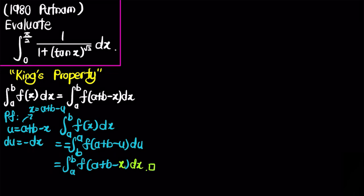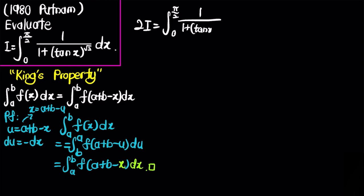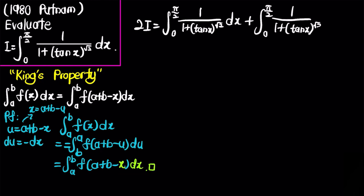To use this property, let this integral equal I. We write 2I as the integral from 0 to π/2 of 1 over 1 plus tan^√2(x) dx, plus a copy of the same integral from 0 to π/2 of 1 over 1 plus tan^√2(x) dx.